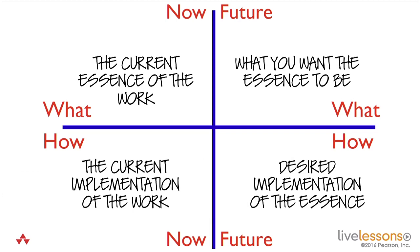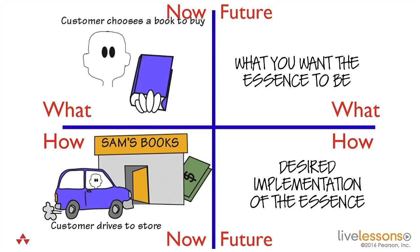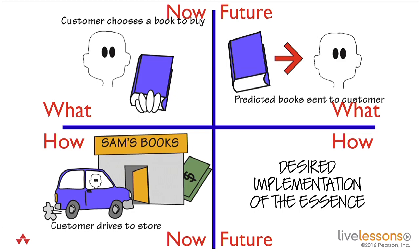Just as an example of that, here's Sam's books. Customers drive to the store, go inside and buy a book, pay money. If I look at the essence of that, I've got to scrape away the car, which is a piece of technology, and the store and all the rest of it. And essentially all it is, is a customer choosing a book to buy. That's the essence of the bookstore. Now, what do I want the future essence to be? Sam has come up with the idea that he wants to predict books and send them to the customer. If he can predict accurately enough, he'll have a customer for life, because rather than having to hunt around for something to read, Sam is supplying the kind of books that customer wants to read.